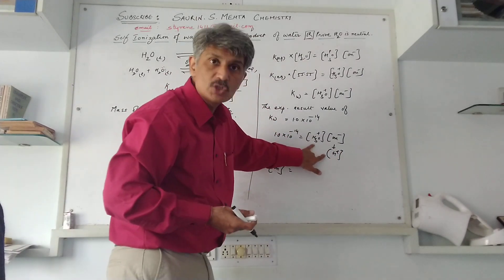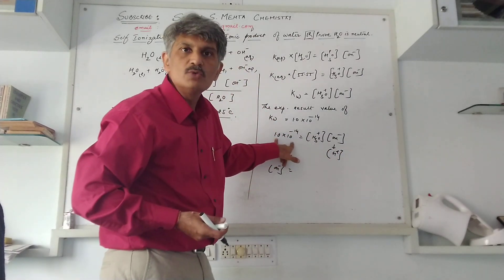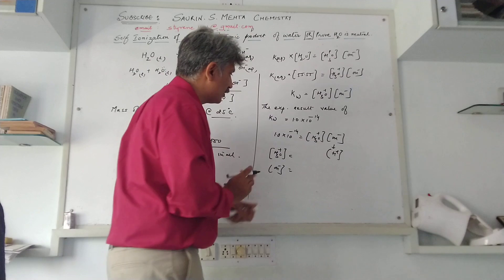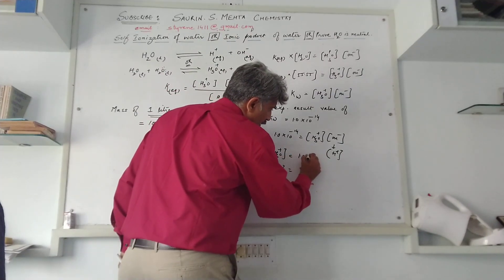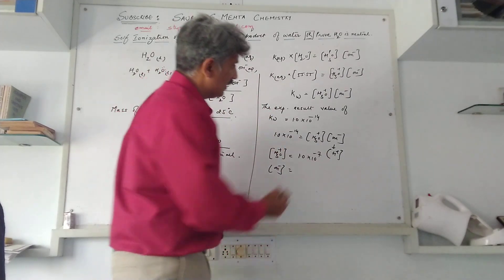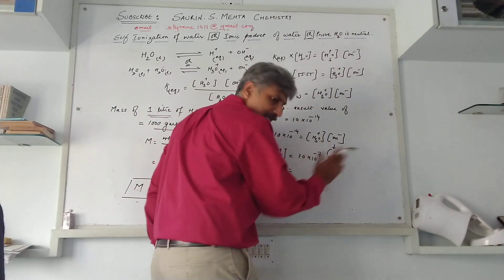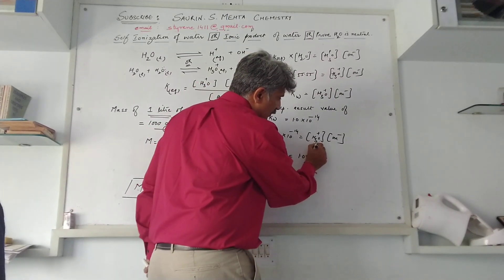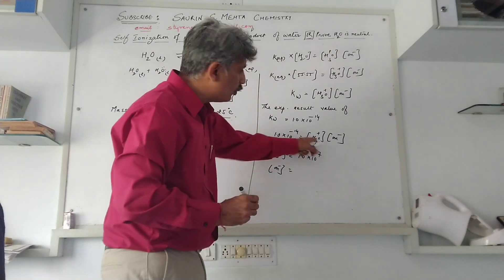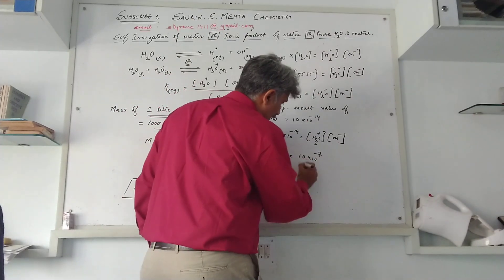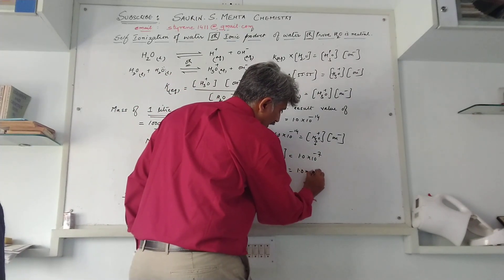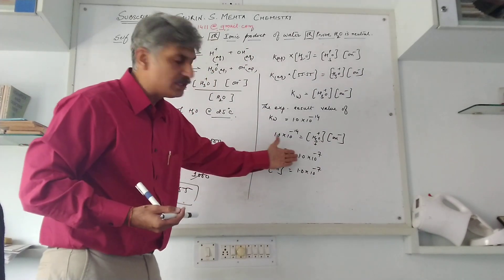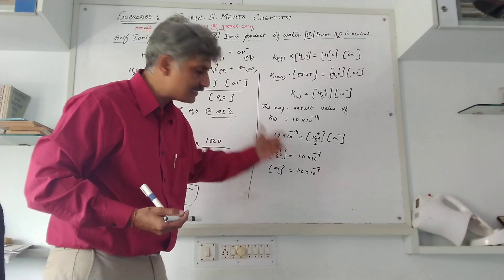[H⁺]² = 1×10⁻¹⁴, therefore [H⁺] = 1×10⁻⁷. Similarly, substituting for OH⁻: [OH⁻]² = 1×10⁻¹⁴, therefore [OH⁻] = 1×10⁻⁷. So for both H⁺ and OH⁻, the concentrations are equal at 1×10⁻⁷ respectively.